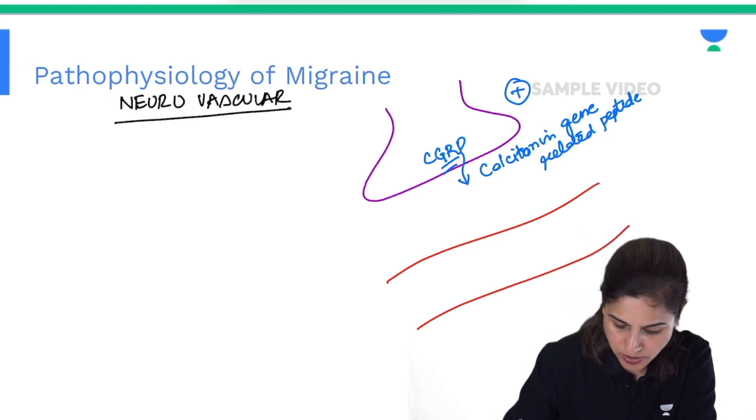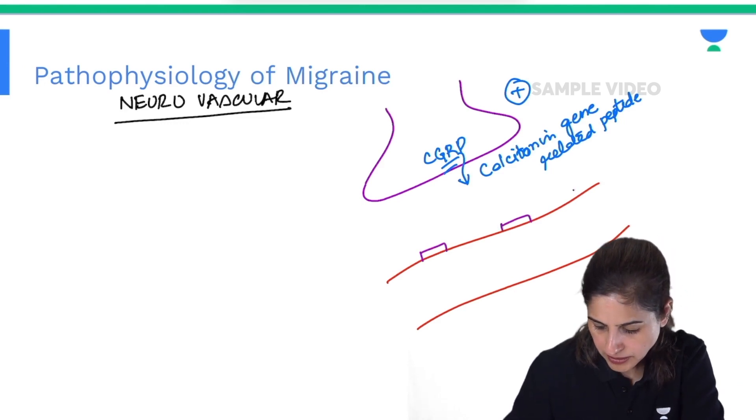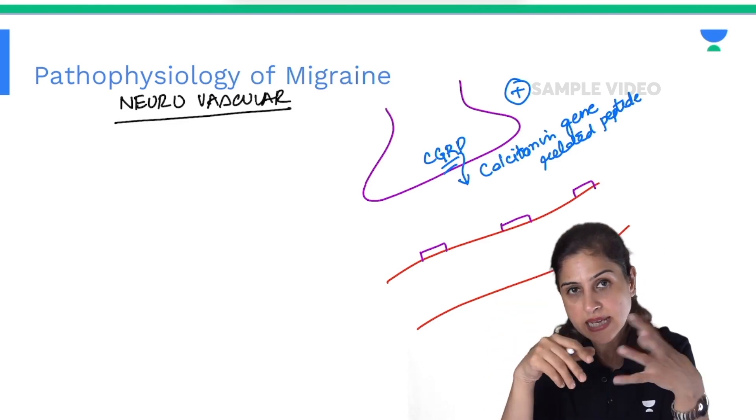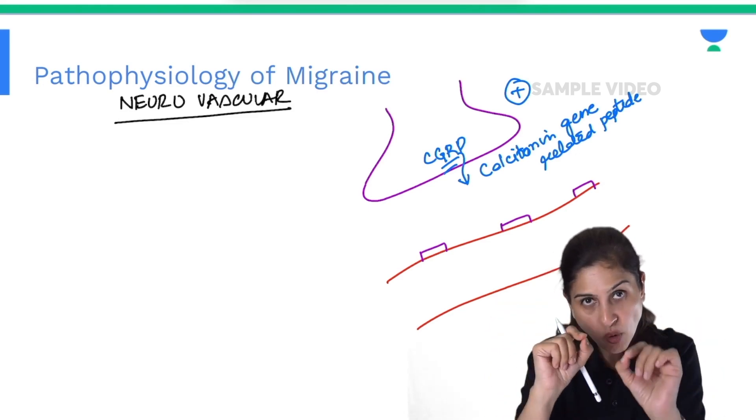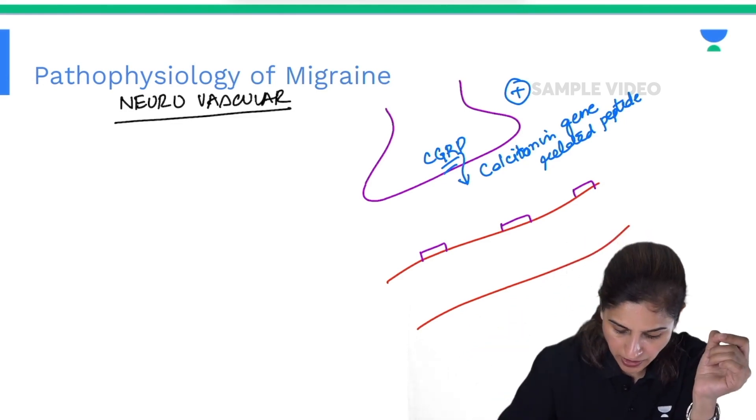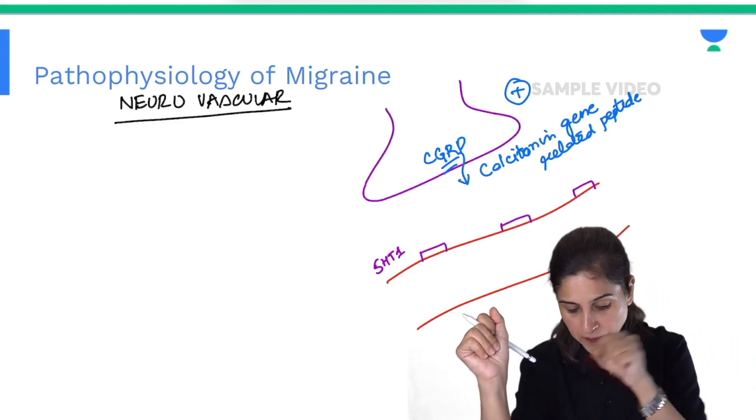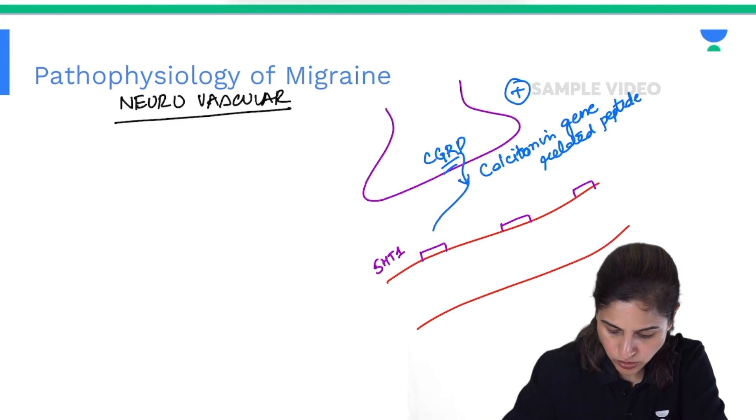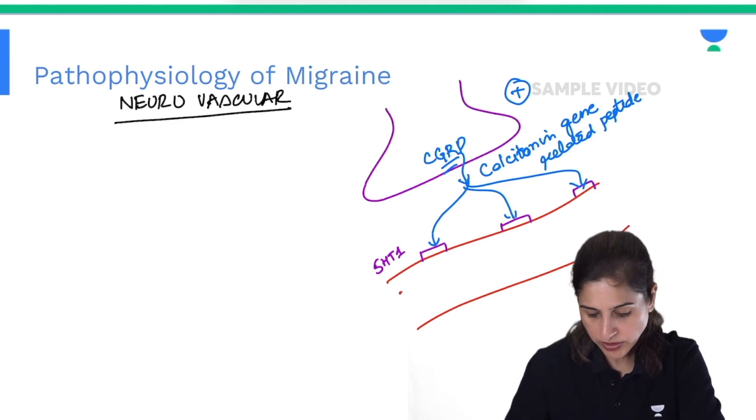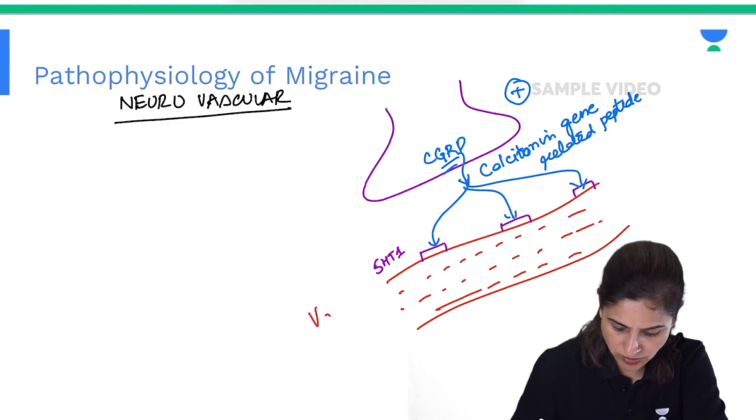This calcitonin gene-related peptide acts on receptors present on the meningeal blood vessels. As we discussed in the topic of serotonin, the important receptors in the blood vessels are 5-HT1, specifically 1B and 1D. This CGRP acts on these receptors and causes vasodilation.